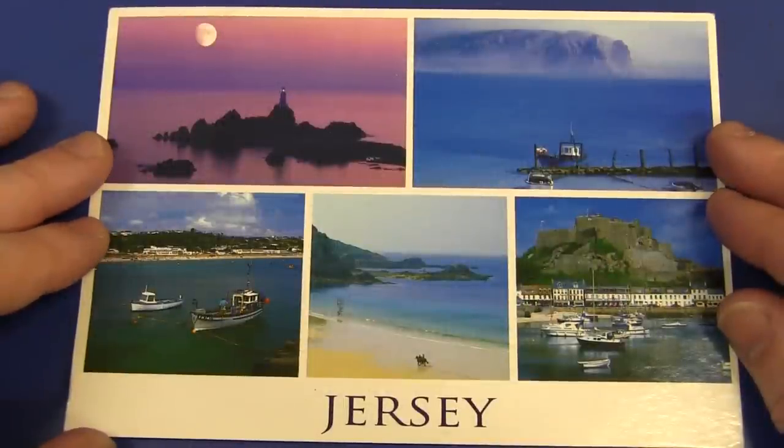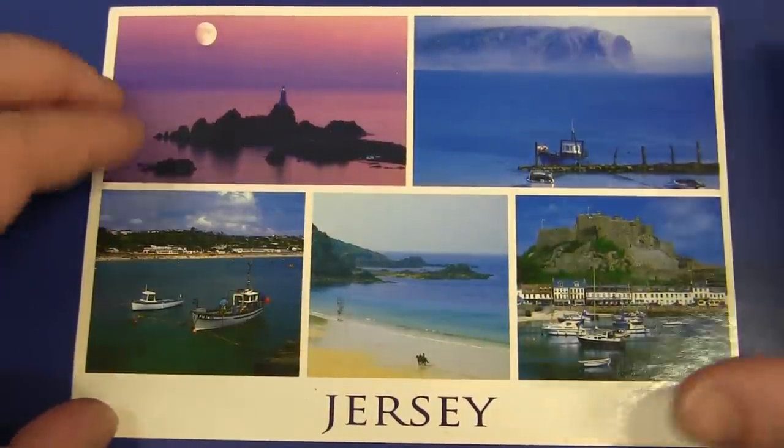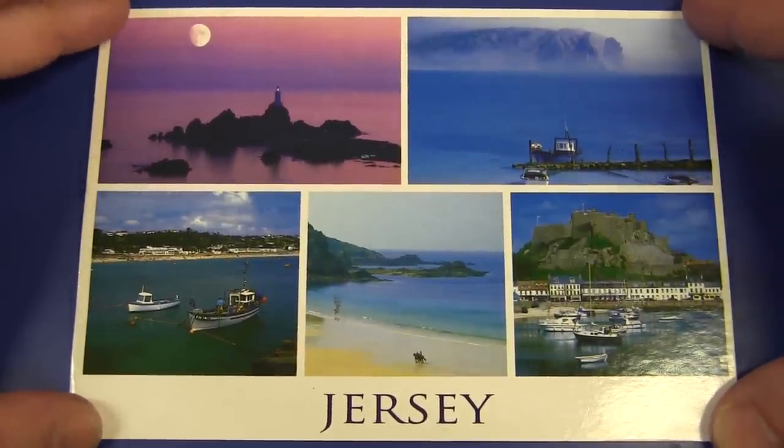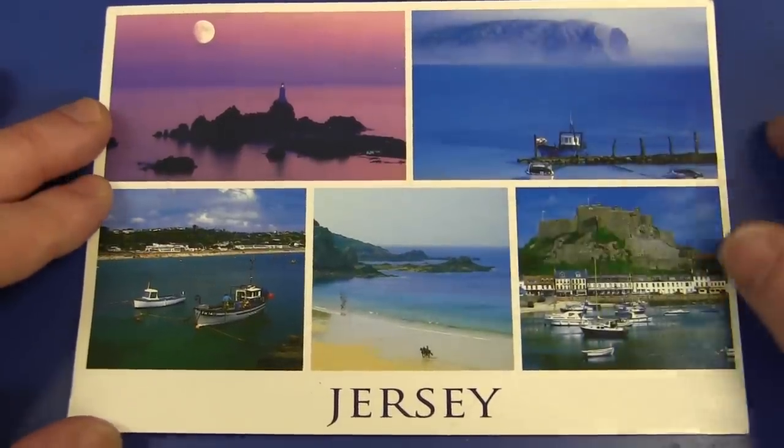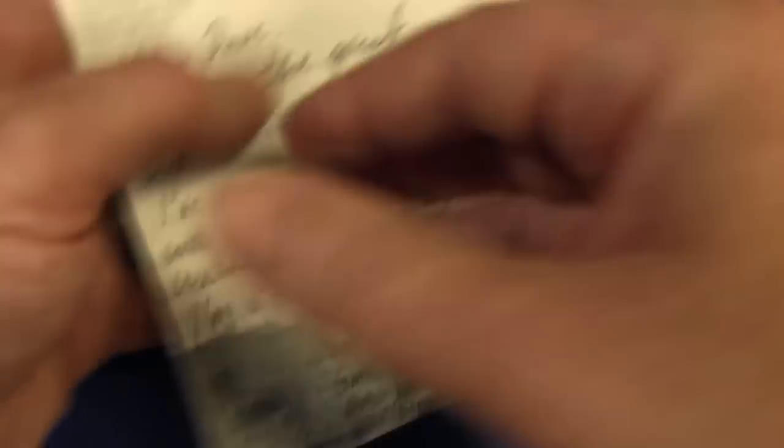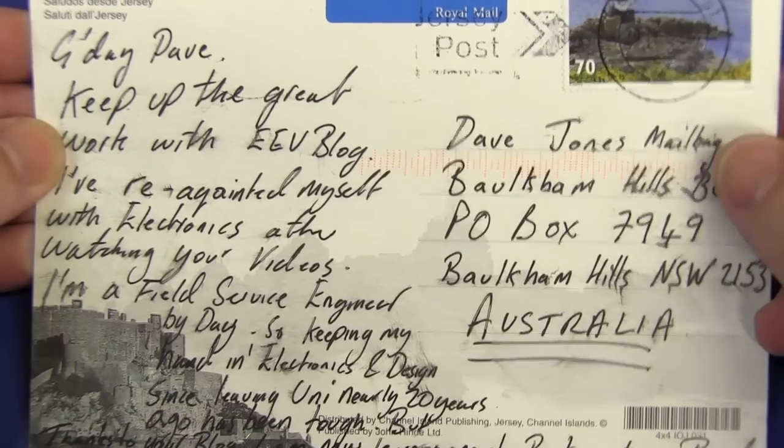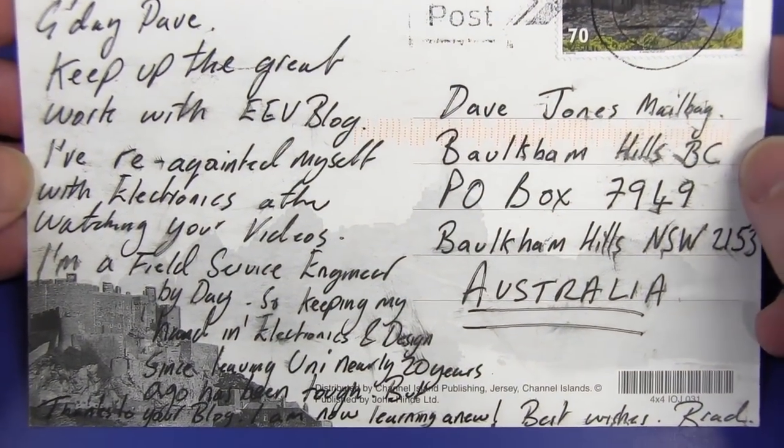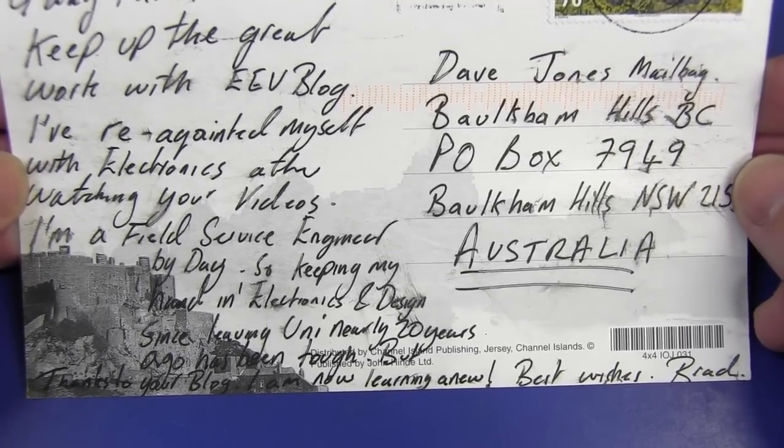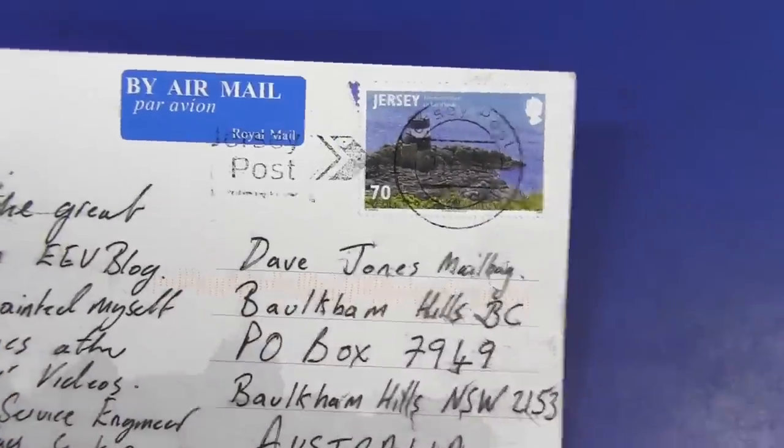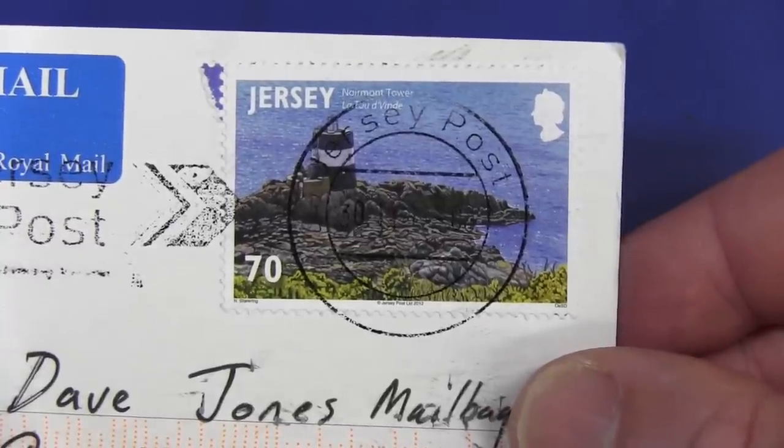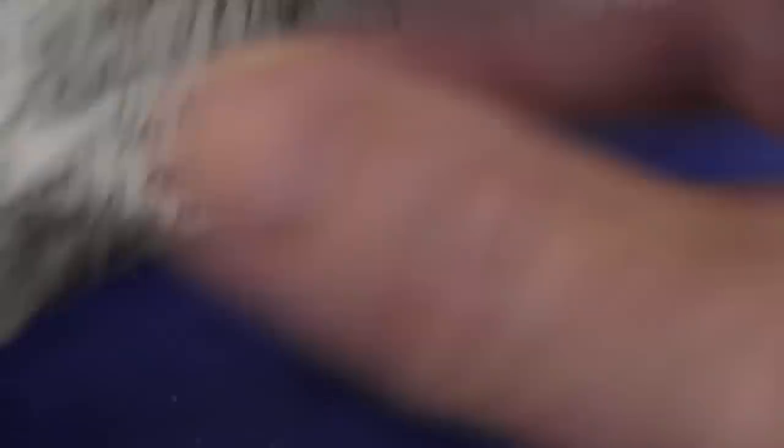And it's postcard time, and this one is from Jersey. And, well, not New Jersey folks. I had to look up Jersey. I didn't know what it was. It is officially, according to the Wikipedia page, it is the Bailiwick of Jersey is the correct name of that. A little island off the coast of Normandy in France there. If you know your war history, we know all about Normandy there. So this one comes from Brad. Hey Brad. And, hey Dave, keep up the great work with EEV blog. I've reacquainted myself with electronics since watching your videos. I'm a field service engineer by day, so keeping my hand in electronics and design since leaving uni nearly 20 years ago has been tough. But thanks to your blog, I'm now learning more. Excellent. Thank you very much, Brad. That is awesome. And let's take a look at the stamp here. We've got a stamp from Jersey, from Jersey Post, 70. I'm not sure what their currency is. I forgot to look that up. And that is Normont Tower by the looks of it. I like that. So there you go.